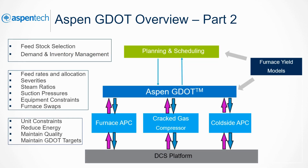Starting with the DCS, the base control reads inputs and writes outputs to and from the field. The APC controllers send setpoints to the DCS loops to maintain unit constraints and quality while reducing energy use. The APC controllers, through external targets, are also maintaining GDOT optimization outputs. GDOT is using a PIMS-AO model along with economic parameters while updating model parameters and true plant constraints in the PIMS-AO model. Both PIMS-AO and GDOT are using the same furnace yield model for consistency.